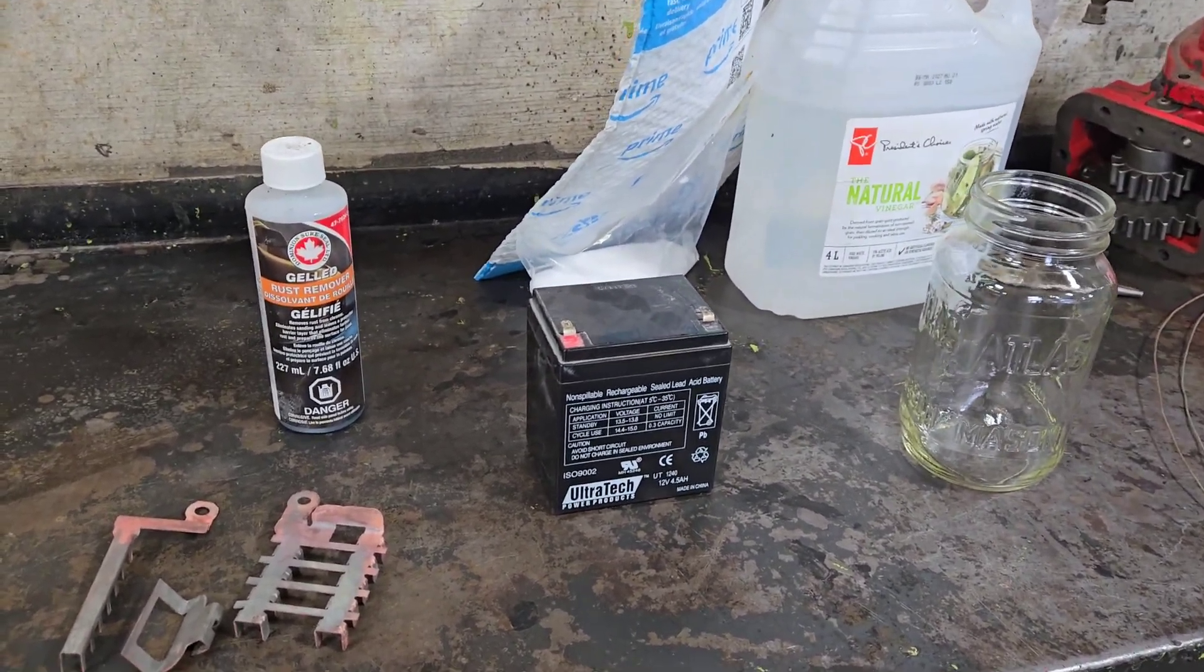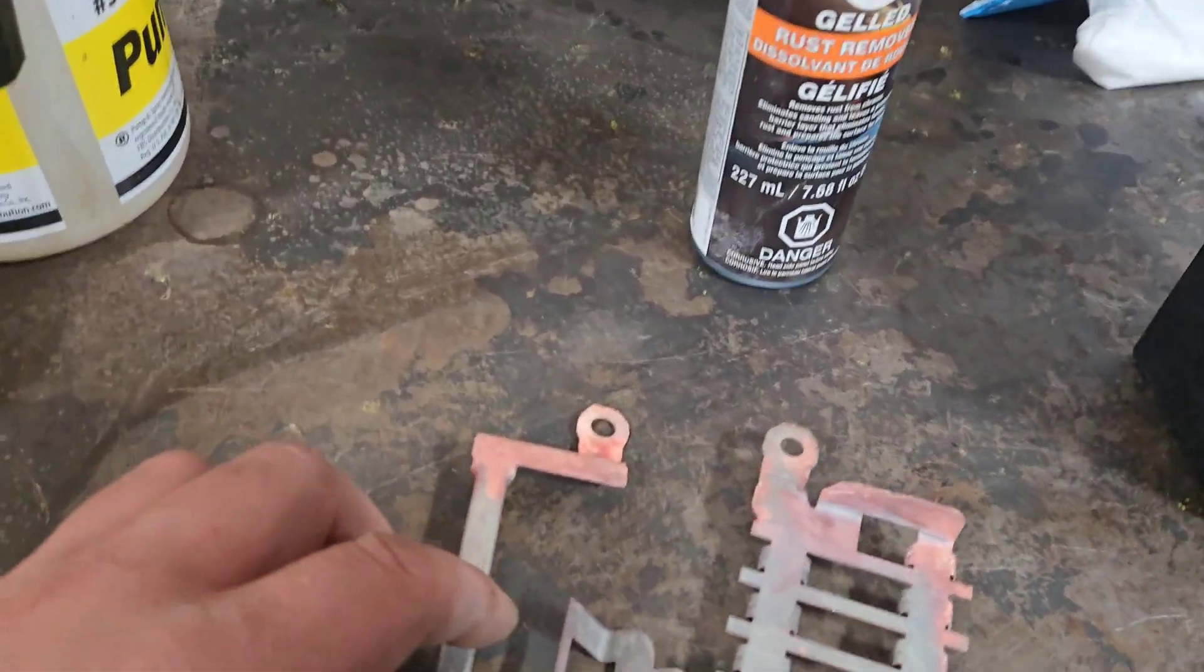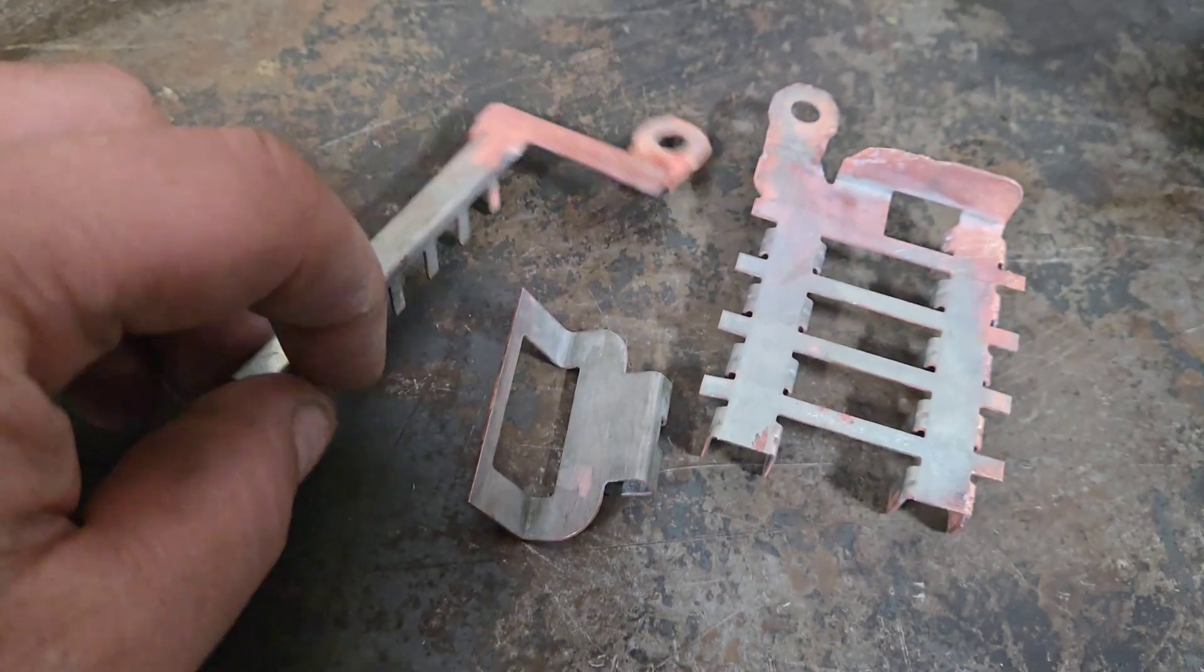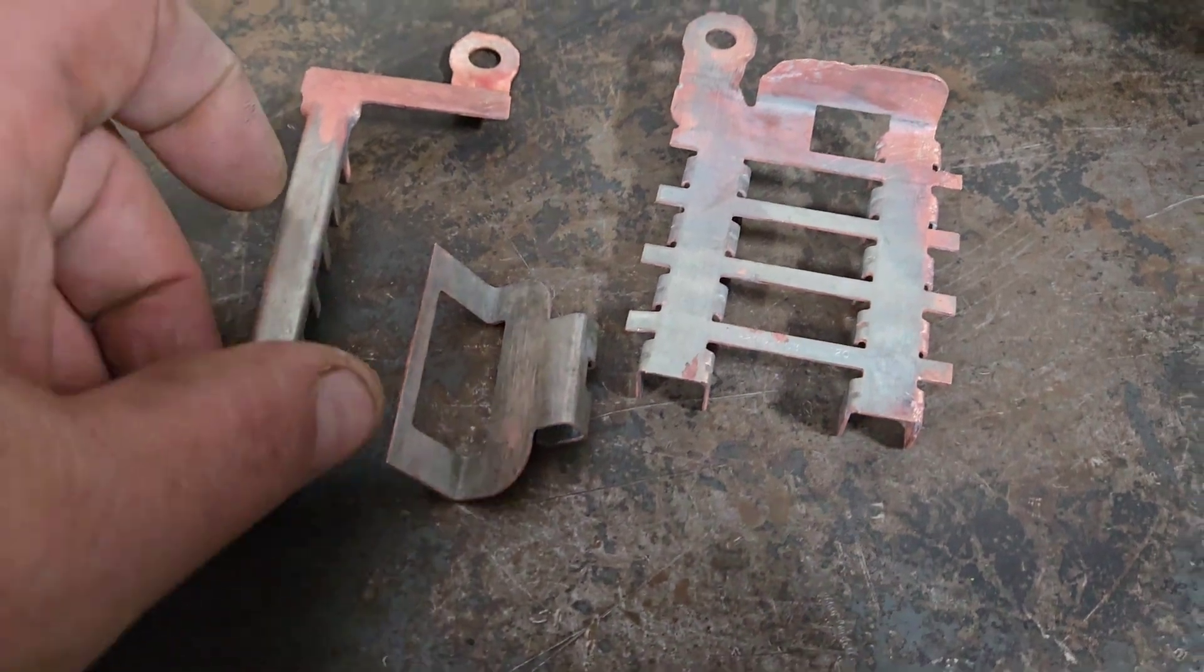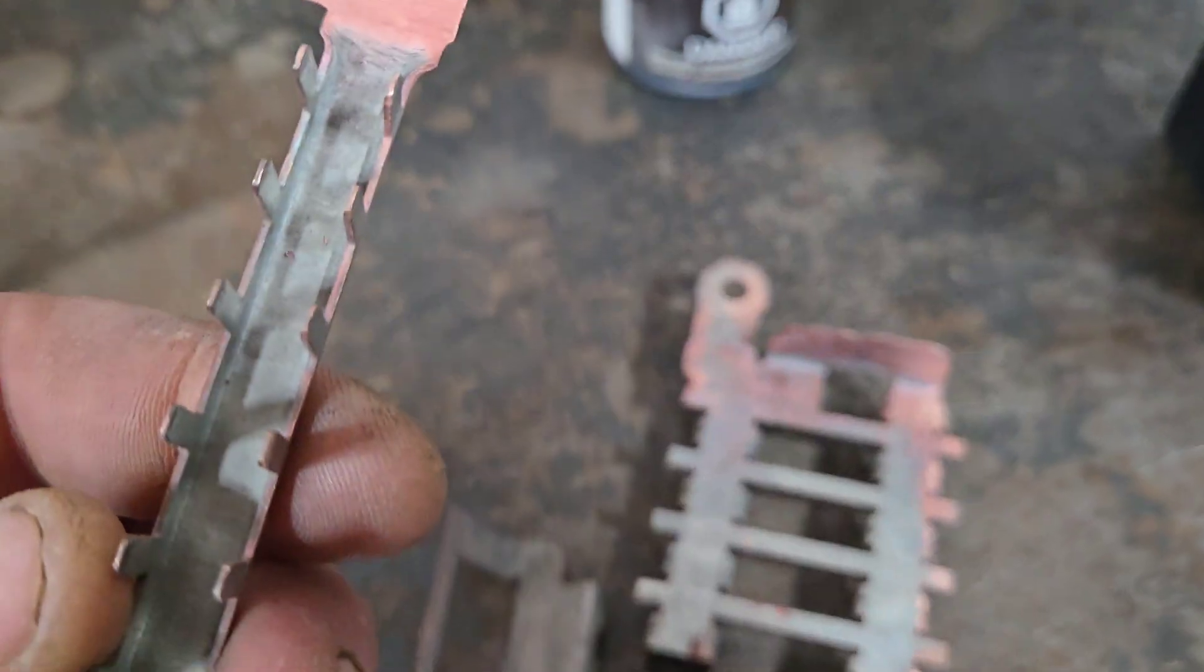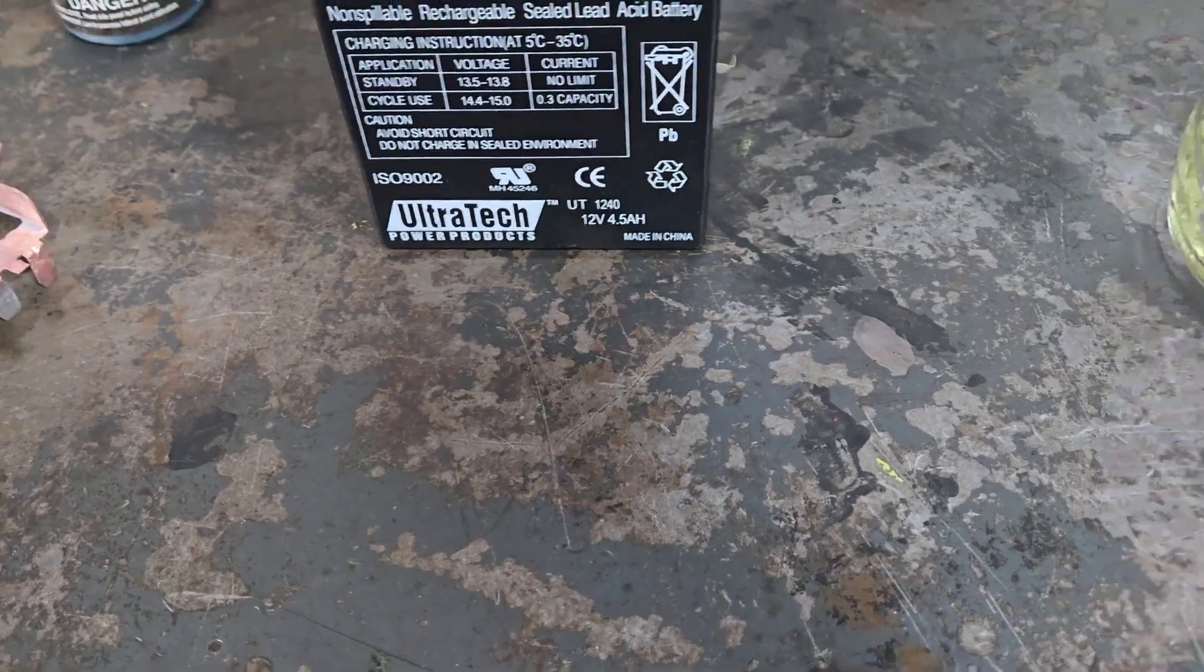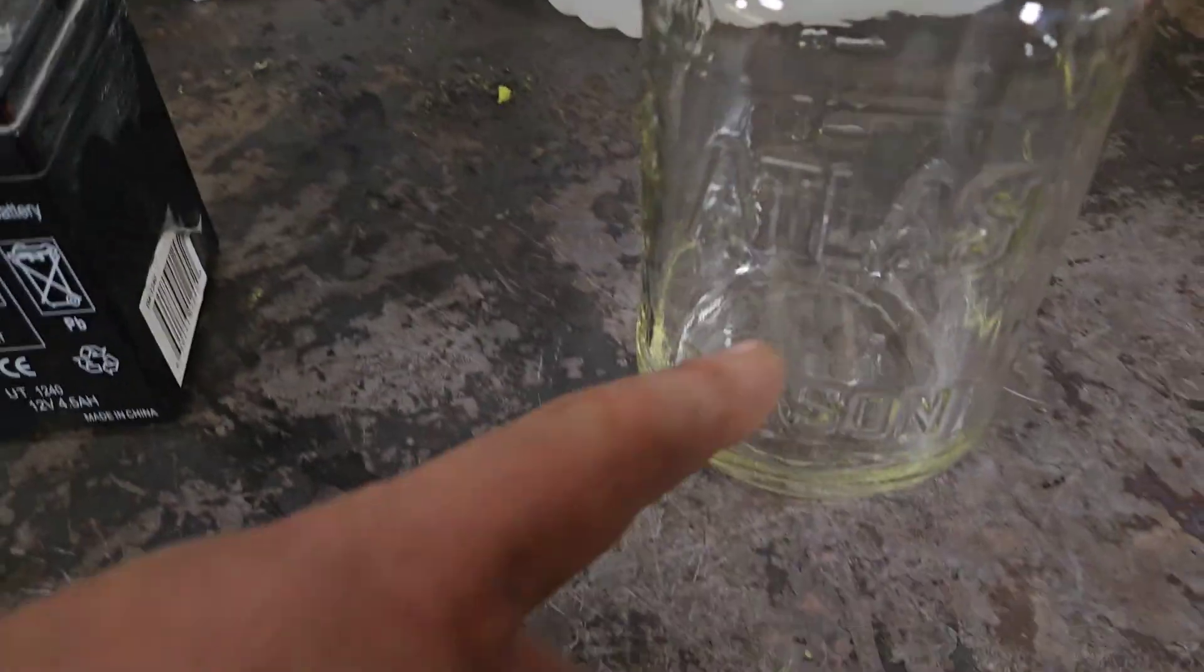I need to replate these, so I have a nickel anode. First off, I clean these up. I use some of this, cleaned all the green stuff off. You're going to need some vinegar, some salt, mason jar.